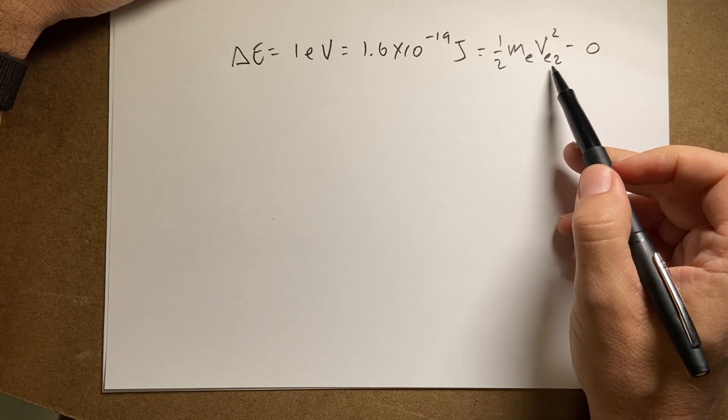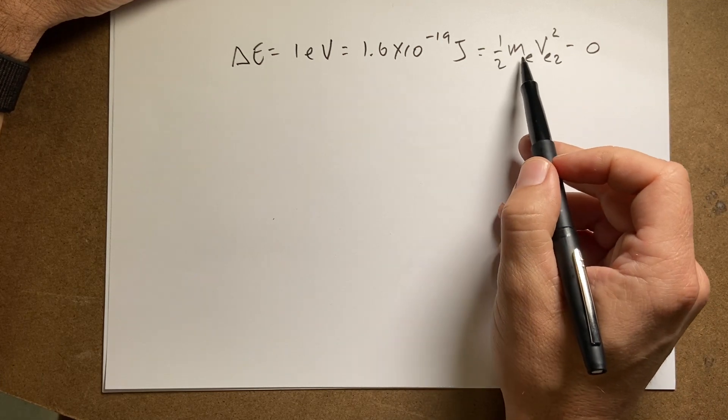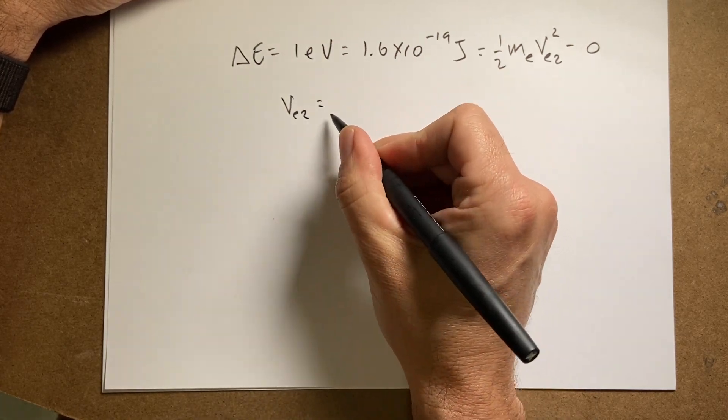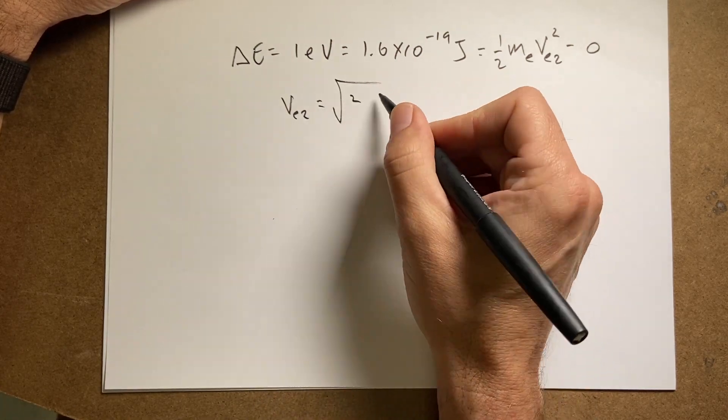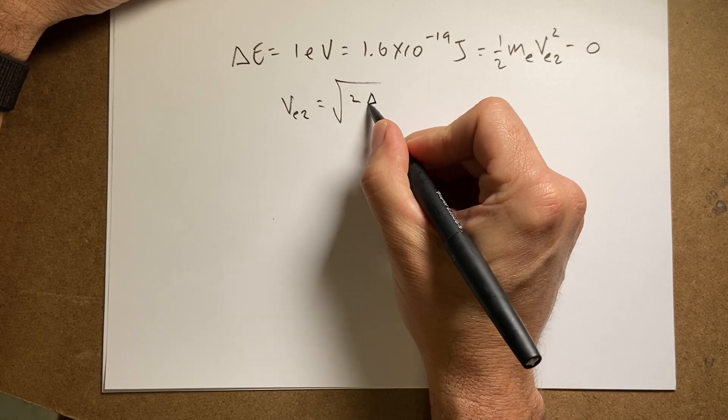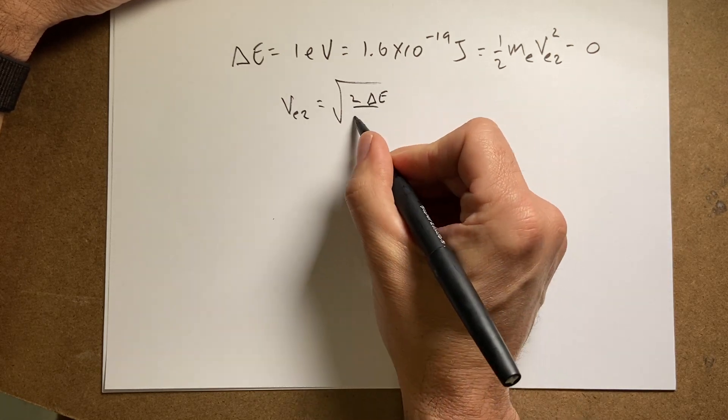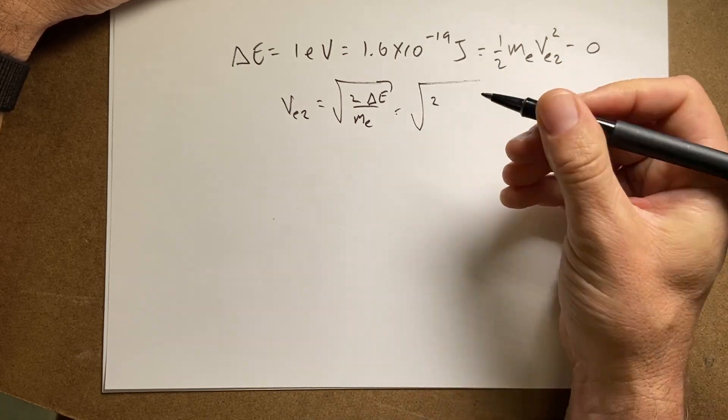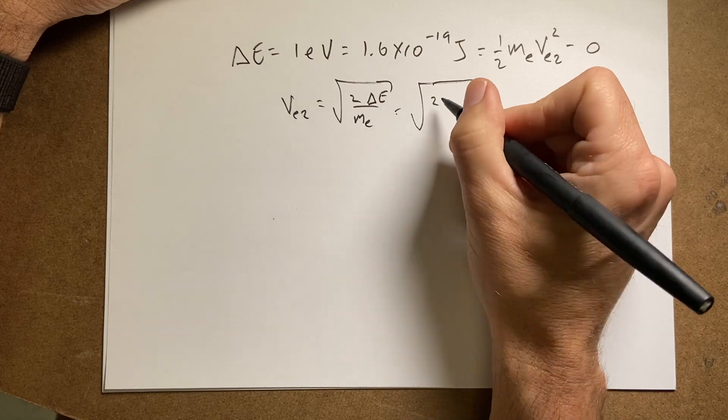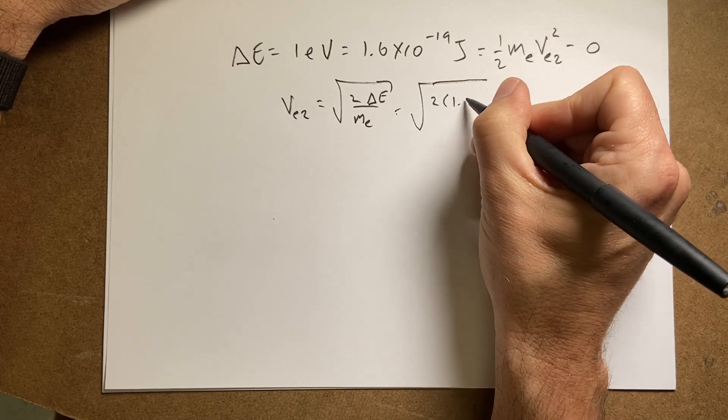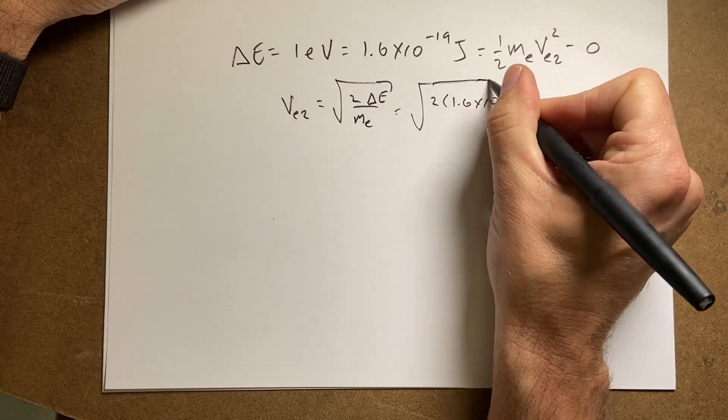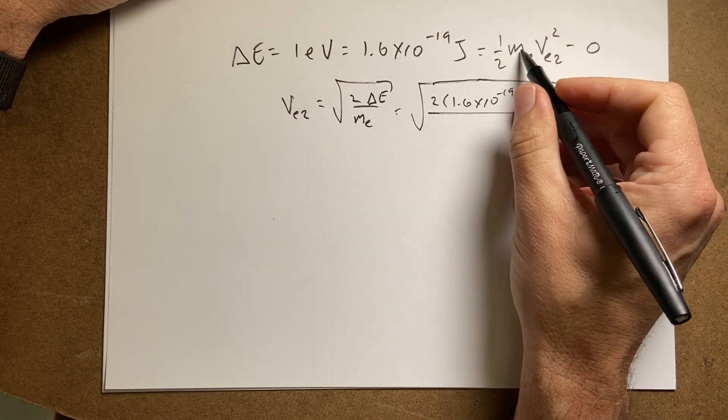Now I want to solve for the velocity, I'm going to multiply by two and divide by the mass. And I get Ve squared equals the square root of two, I'll write this as delta E over mE. And so if I put the square root of two, oh my pen's running out, I'm pushing too hard.